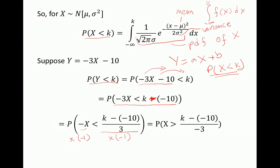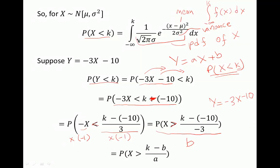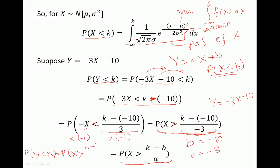Now let's multiply each side by negative 1. Remember the inequality reverses when multiplying by negative 1. So from having negative x less than, we now have x greater than. That equals the probability of x greater than k minus negative 10, divided by negative 3. Since y equals negative 3x minus 10, b equals negative 10 and a equals negative 3, so this expression is just k minus b over a. We derive that P(Y < k) equals P(X > k - b/a) when a and b are less than zero.